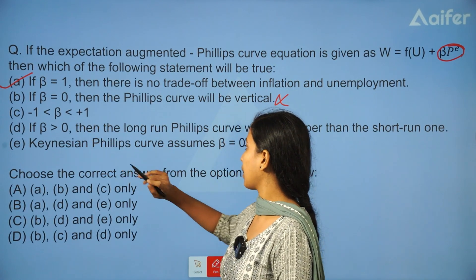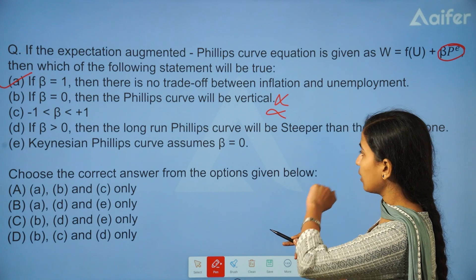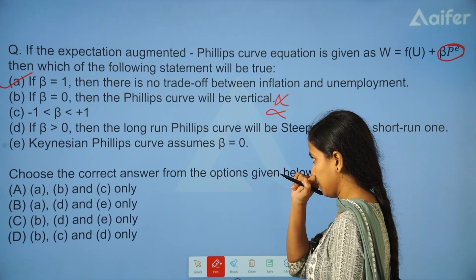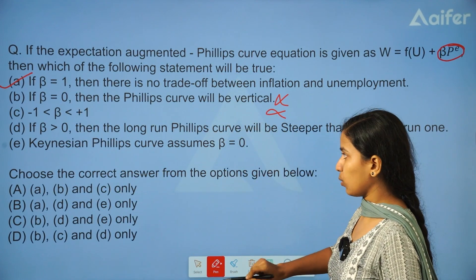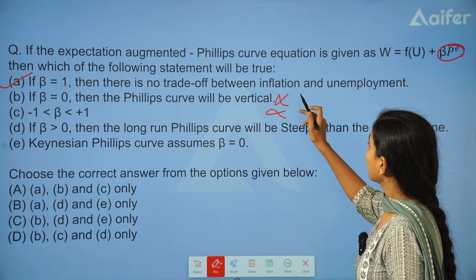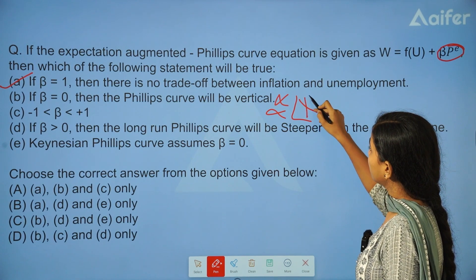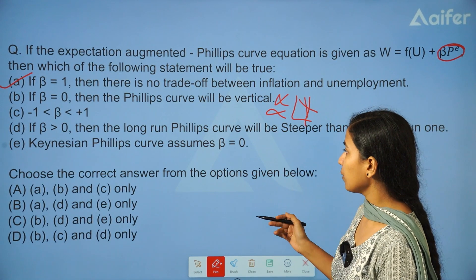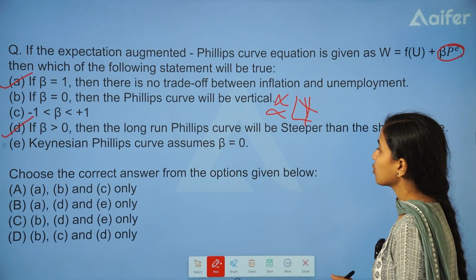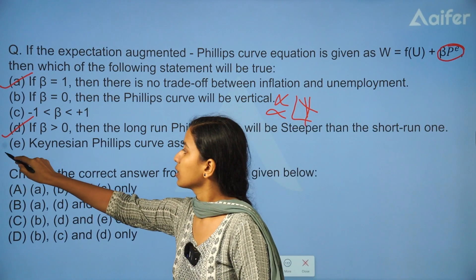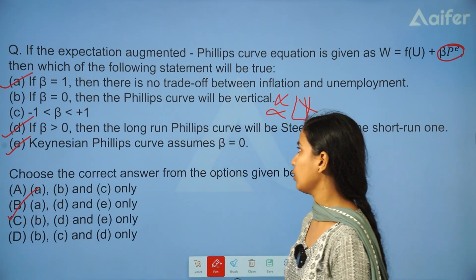If beta is greater than 0 but less than 1, then the long-run Phillips Curve will be steeper than the short-run one. If beta equals 0, it gives the downward-sloping original Phillips Curve, while beta equals 1 gives a vertical curve — steeper than vertical means long run is steeper than short run. The Keynesian Phillips Curve assumes beta equals 0. That is true. The answer is option B: A, D, E only.